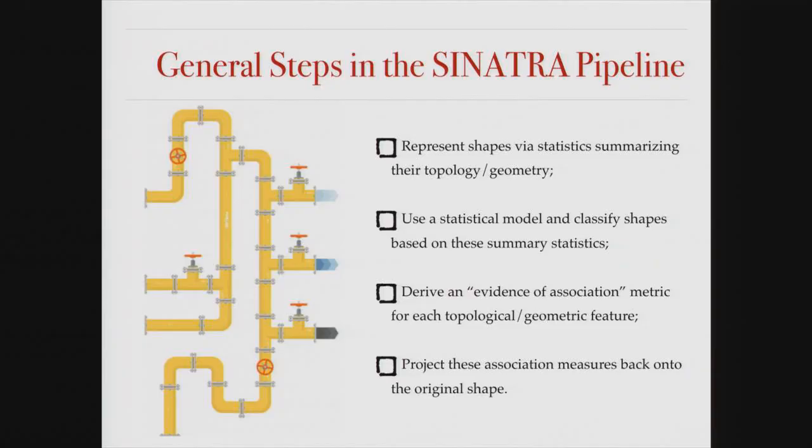We do simulations on all sorts of stuff. SINATRA is a pipeline — again, if you don't like anything I'm going to show you, just remove the pipe and stick your favorite thing in. The four general steps are: represent the shape as a statistic you can model; define some probability model to classify these shapes based on these statistics; derive an evidence of association — p-value, posterior inclusion probability, Bayes factor, or the rate measure I'm going to show; and then project these measures back onto the original shape.